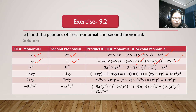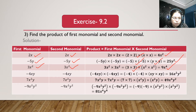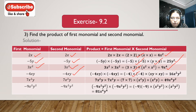Third bit: 3x square and 3x square. Product is 3 multiplied with 3 is 9, and x square multiplied with x square is x to the power 2 plus 2, which is x to the power 4. So we get 9x to the power 4. Fourth bit: minus 4xy and minus 4xy. Minus 4 multiplied with minus 4 is 16, and xy multiplied with xy gives x square and y square. So we get 16x square y square.